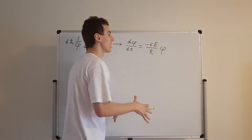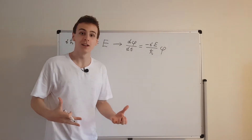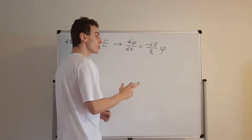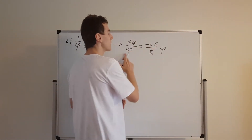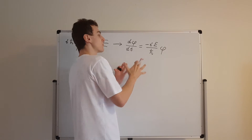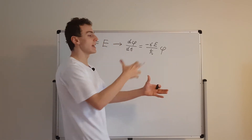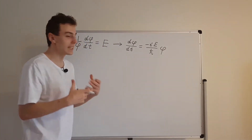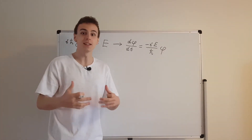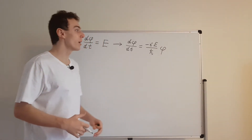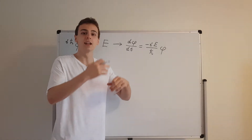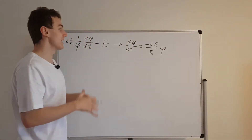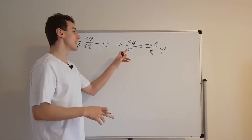Have a look at this: the time derivative of a function equals the function itself multiplied by a constant. What kind of function has that property? It turns out it's the exponential function. The exponential function has the property that its derivative is proportional to itself. We have e to the power of some constant times our variable — and in this case, that variable is t, not x.